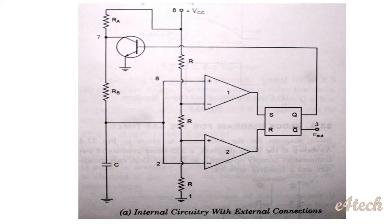The capacitor discharges until the voltage falls to 1/3 VCC. At this point, comparator 2 output goes high, which resets the flip-flop. The output goes high again and Q output goes high. The transistor turns off, and the capacitor begins to charge again towards 2/3 VCC. Comparator 1 then goes high, the flip-flop resets, and Vout goes low again.